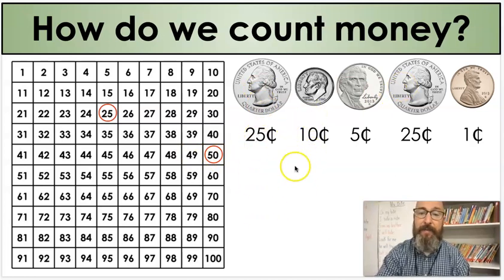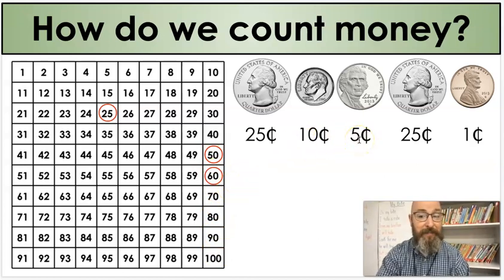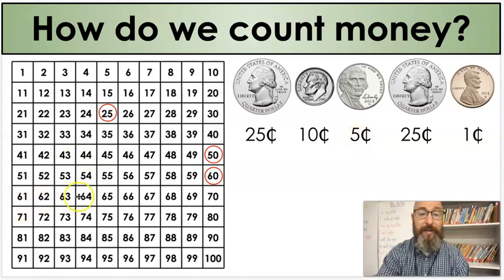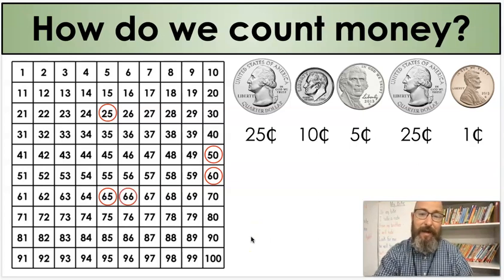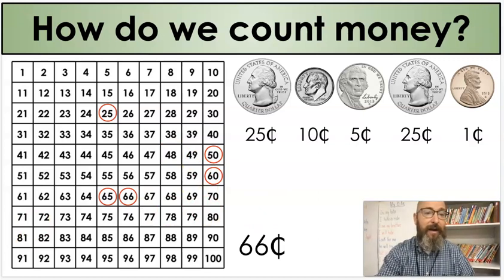Next, we're going to do our dime. It's 10 cents. I just moved down one, right? So where am I going to be? 60. Because we know that every time we move down on a hundreds chart, we're counting by 10s. We have our nickel. What's it going to be? One, two, three, four, five. 65 is correct. We have a penny. How much do I move? Where's it going to land? 66. That's correct. So we've got all five coins again, and that means we have 66 cents. All right.